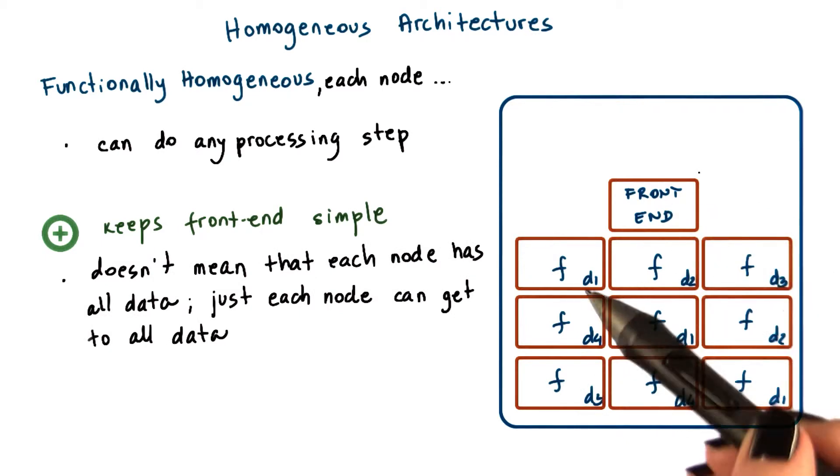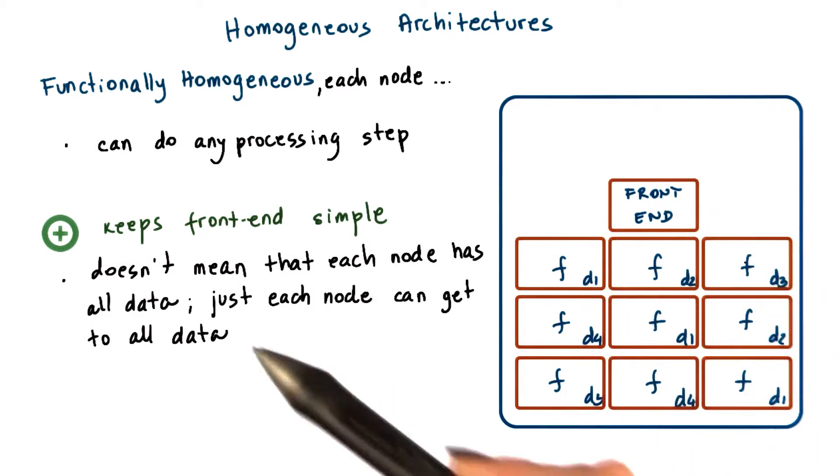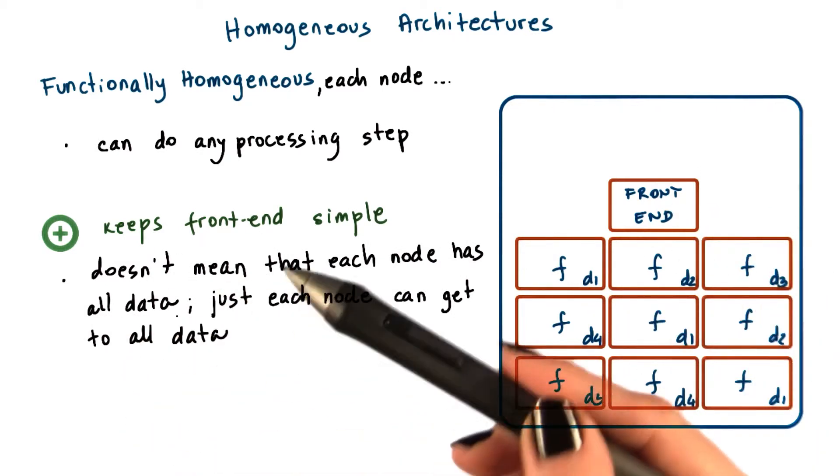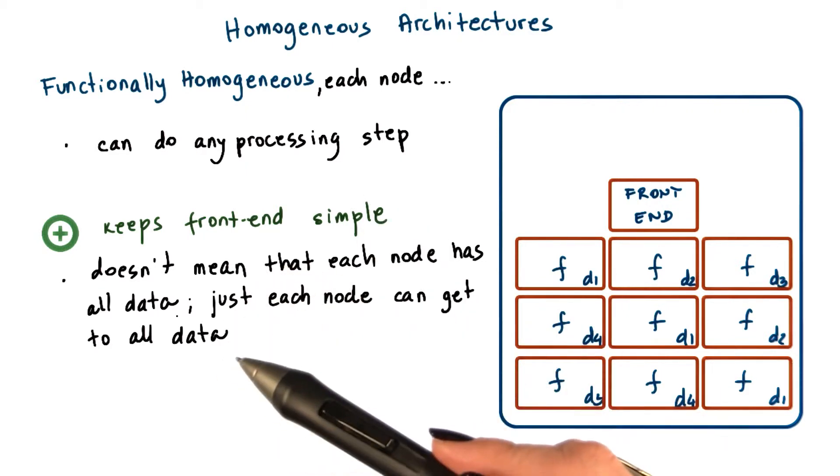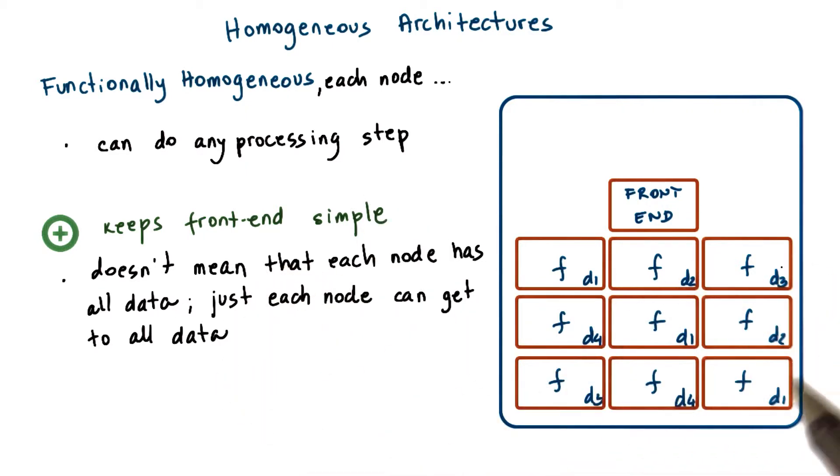This design doesn't mean that every single one of the nodes has to store all of the data, all of the state that's needed for the internet service. Instead, data may be somehow replicated or distributed across these nodes.